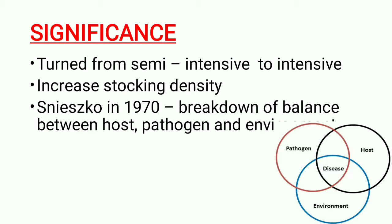We have to know about host, pathogen, and environment factors that are useful for disease development. Hosts include physiological state, reproductive development stage, stocking density, host susceptibility, and immunity. There is not just one factor that causes disease — there can be multiple factors. We usually handle fish, process it, and prepare it for sale in the market, and due to all these activities, disease often occurs in fish.